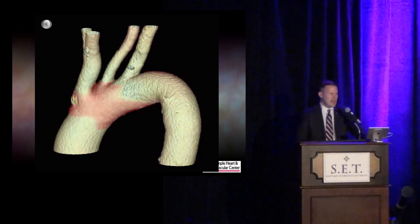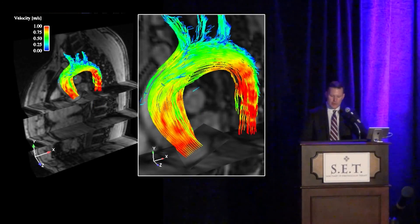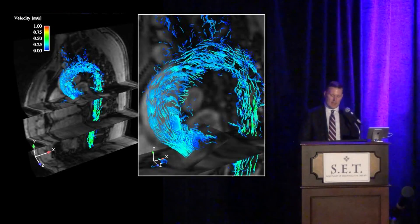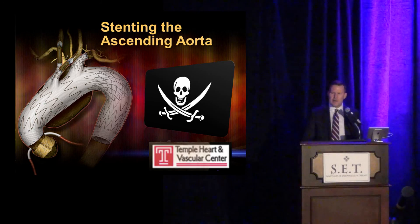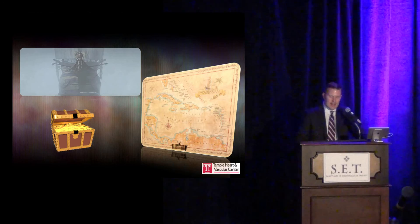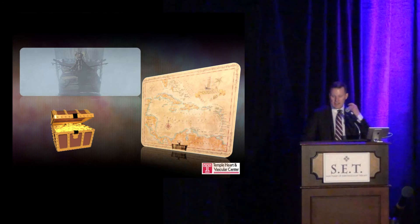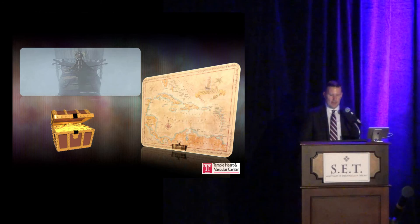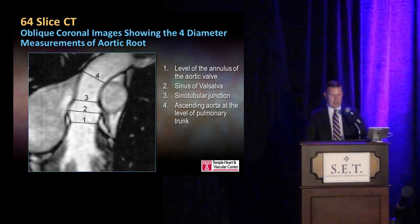Let's focus on the ascending aorta, a very challenging area both anatomically and surgically. You can see in this CT angiogram video that there are a lot of forces and motions in the ascending aorta. This is like being in pirate territory — things we talk about but not everybody believes we're ready for. The anatomy involves not only the ascending aorta but the concomitant structures: the aortic root, aortic valve, and often the proximal aortic arch.